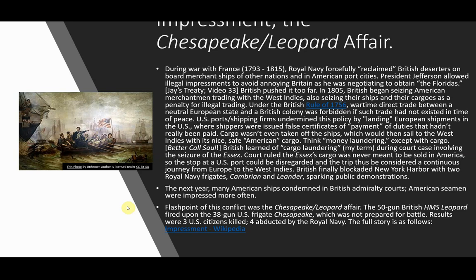But the British pushed it too far. In 1805, the British began seizing American merchantmen trading with the West Indies, seizing their ships and cargoes as a penalty for illegal trading. Under the British Rule of 1756, wartime direct trade between a neutral European state and a British colony was forbidden if such trade had not existed in time of peace.